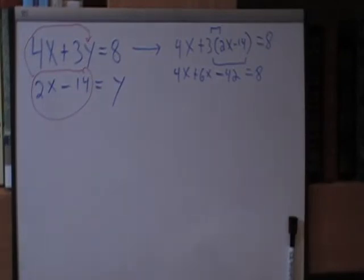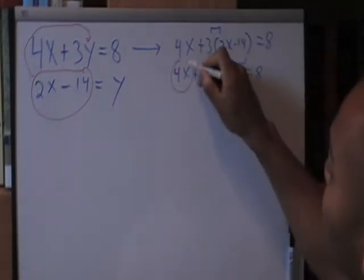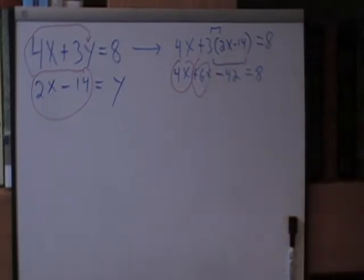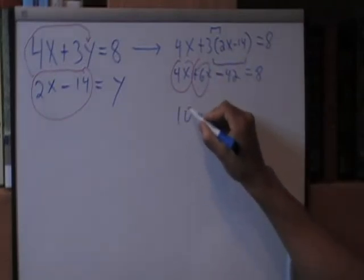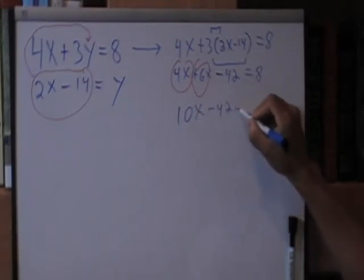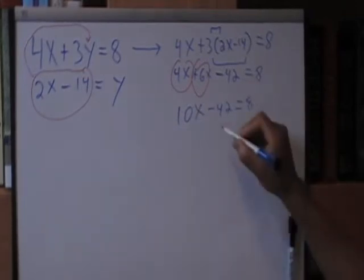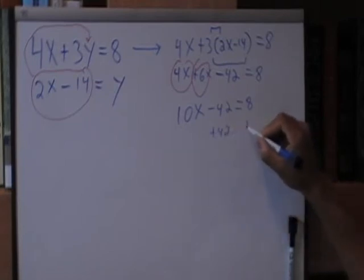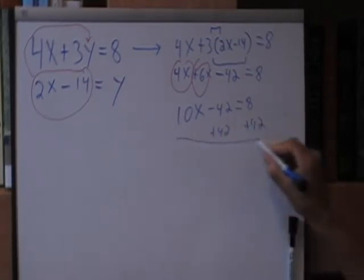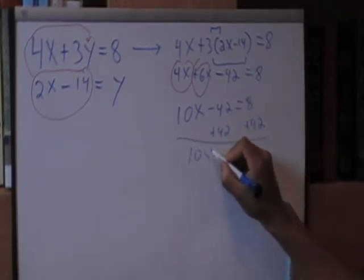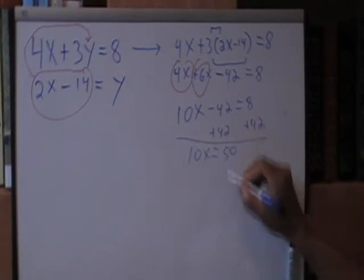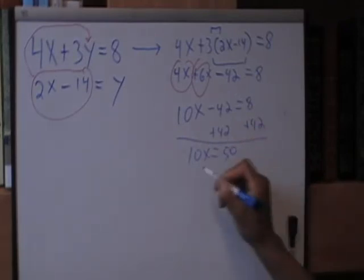We can combine like terms. So, the 4x plus the 6x is going to give me 10x minus 42 equals 8. We're going to add the 42 to both sides. And we're left with 10x equals 50. And you can see that x equals 5.